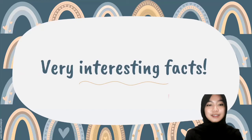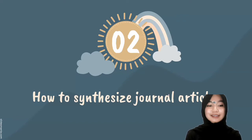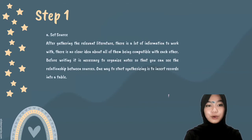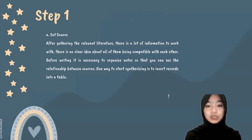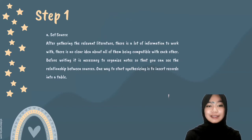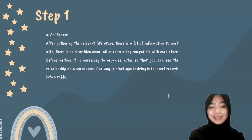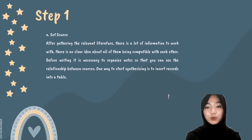The second topic is how to synthesize journal articles. There are many steps, and step one is to set the source. After gathering the relevant literature, there is a lot of information to work with, and there may be no clear idea about how all of them are compatible with each other. Before writing, it is necessary to organize your notes so that you can see the relationship between the sources. One way to start synthesizing is to insert records into a table.